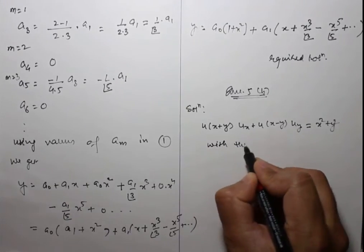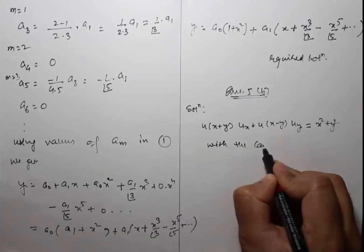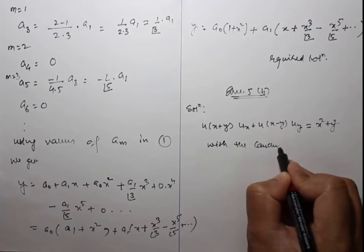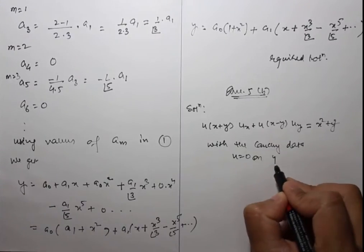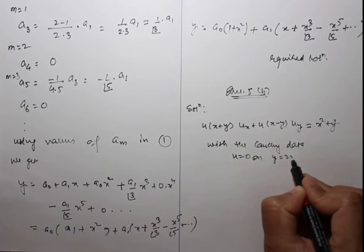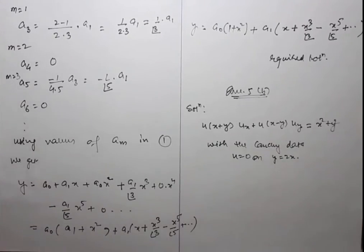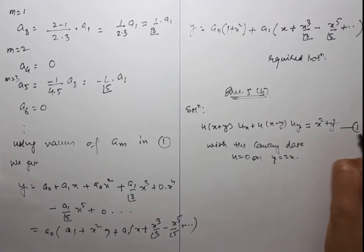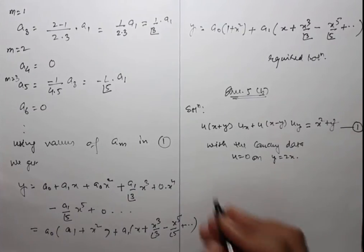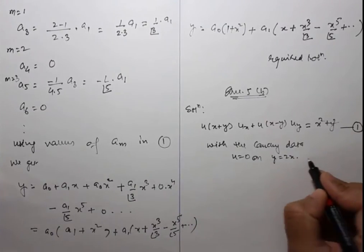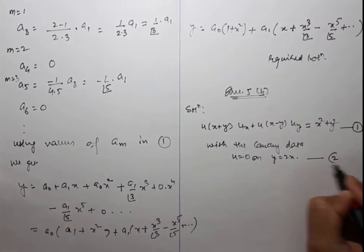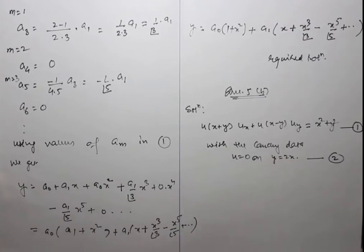The initial data given is u = 2x on y = 2x. This is equation 1 — the initial value condition.